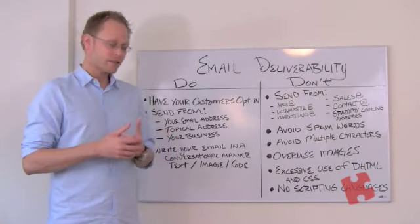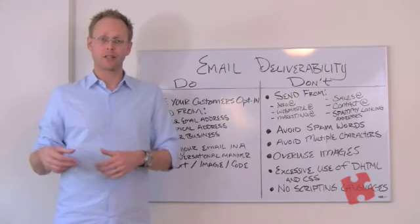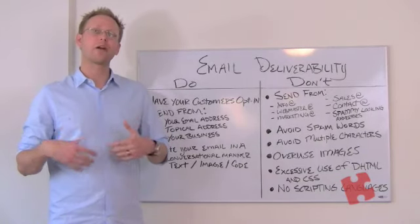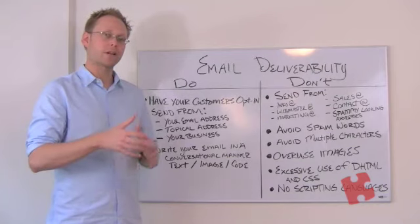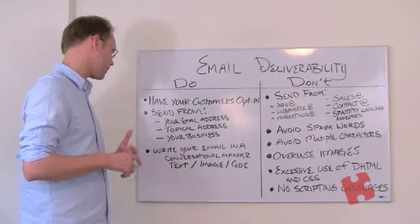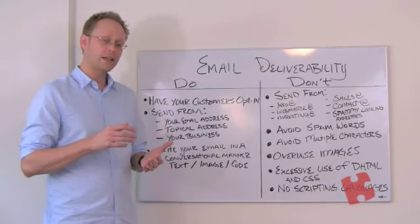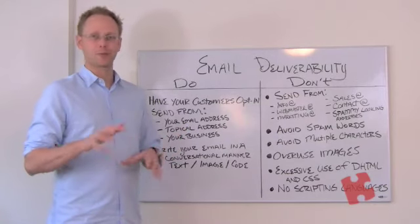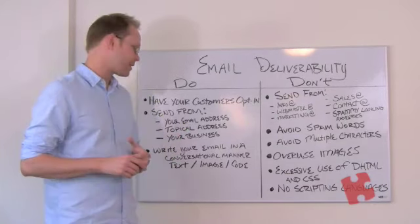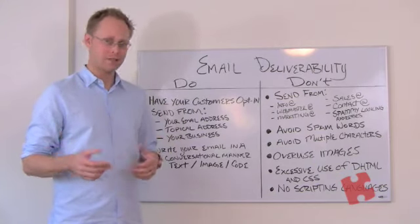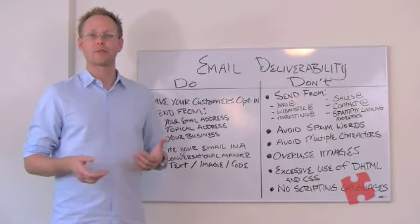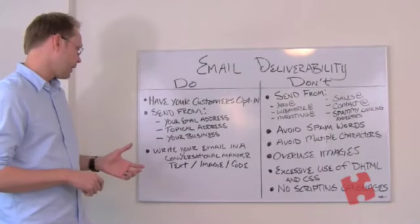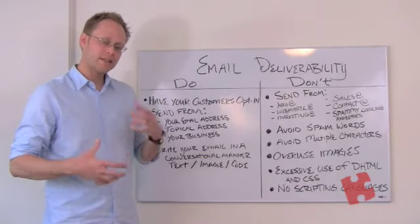Number two: good places to send your email from. First, your personal email address — in our tool you can make it look like emails are coming from your email address even though they're going off our servers, so it won't look like spam because it's an individual user account. Also, any topical addresses — for example, if you're a ski company, something like 'skis'; if you're in the mortgage business, maybe 'mortgage agent.' Finally, your business name — for us at Kutenda, we could send from Kutenda at Kutenda.com.